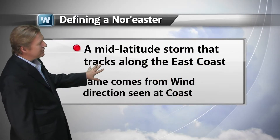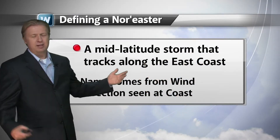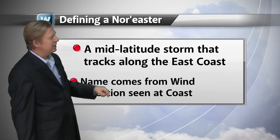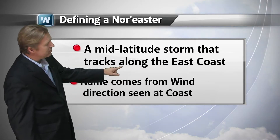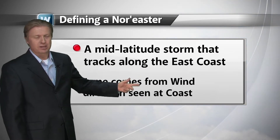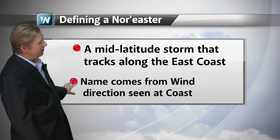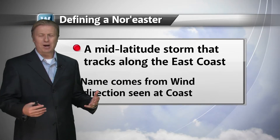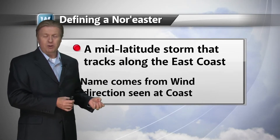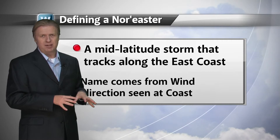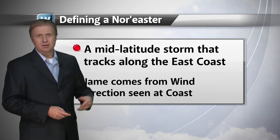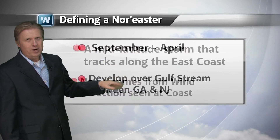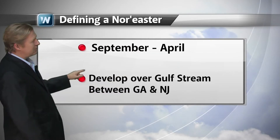By definition, a nor'easter is officially a mid-latitude or extra-tropical cyclone that tracks along the U.S. east coast, or the Atlantic seaboard. The name comes from the fact that the wind direction in those coastal communities impacted by the storm is from the northeast — thus the term nor'easter. No other reason why it picked up that name besides that.